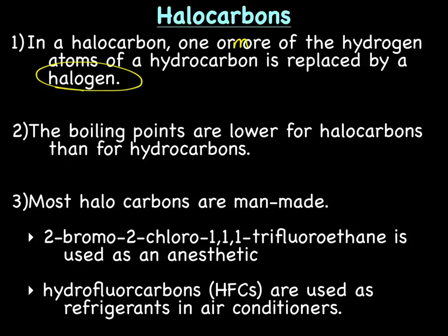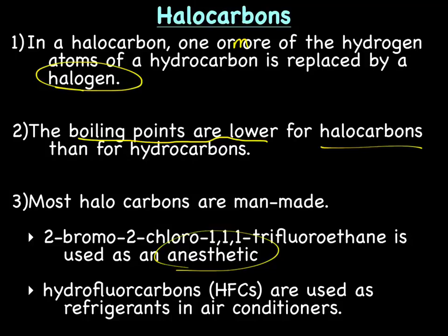The boiling points are lower for halocarbons than for hydrocarbons. In general, organic compounds have relatively low boiling points, and they're even lower for halocarbons. Most halocarbons are not encountered in nature — most are man-made. A few examples: 2-bromo-2-chloro-1,1,1-trifluoroethane is used as an anesthetic, and hydrofluorocarbons — the HFCs you've probably heard about — are used as refrigerants in air conditioners, mostly in cars.